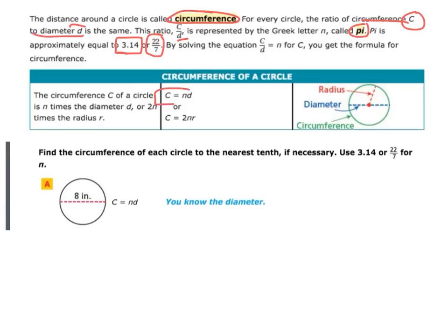Which is c equals pi times d, or c equals 2 times pi times r. Remember, the diameter is the distance across the circle, and the radius is the distance halfway across the circle. The circumference is the distance around the circle. So there's the three vocabulary words you need to solve for the circumference of a circle.